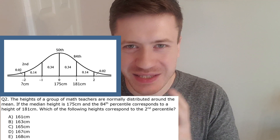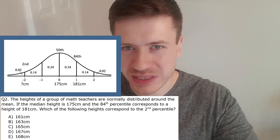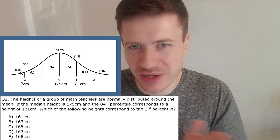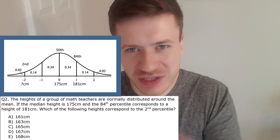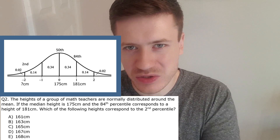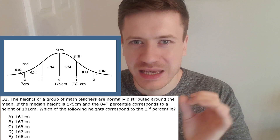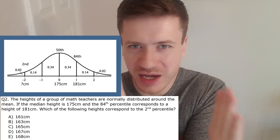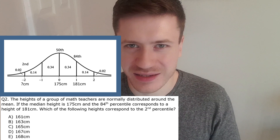Our last step is to find the second percentile, which is two standard deviations below the mean. The mean is 175 centimeters and one standard deviation is 6 centimeters, so two standard deviations is 12 centimeters. Subtracting: 175 minus 12 equals 163 centimeters. And that is the correct answer.